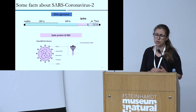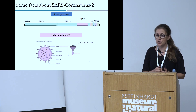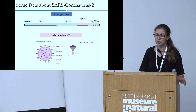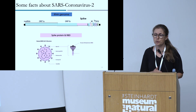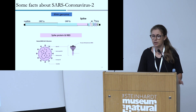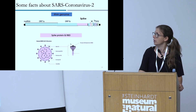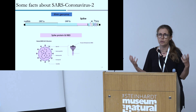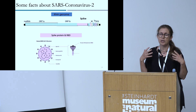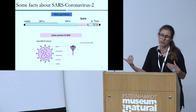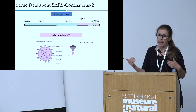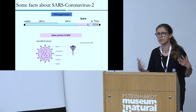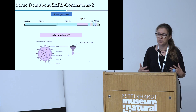The spike gene encodes the spike protein. There is one region of particular interest in this protein called the RBD — the receptor binding domain — which we see here. The receptor binding domain is responsible for the interaction with the ACE2 receptor, which allows the virus to enter our cells and infect them.